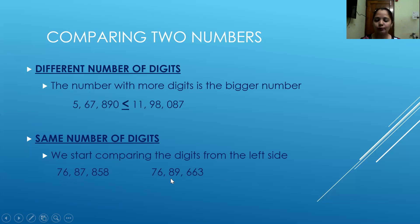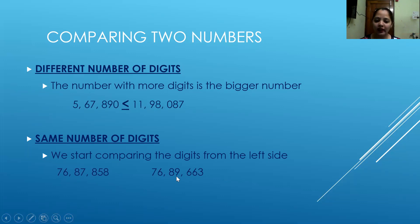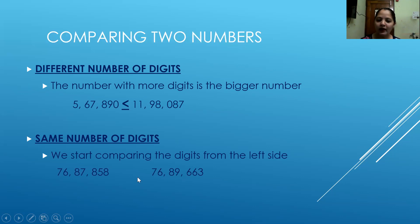So I will compare the third digit — eight. The third digit here is also eight. So I will have to compare the next digit, that is the fourth digit. The fourth digit of the first number is seven, and in the second number the fourth digit is nine. When I compare seven and nine, nine is a bigger digit. So my second number is the bigger number.